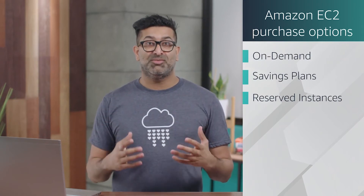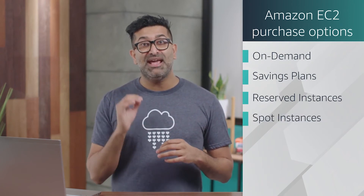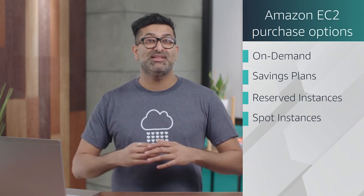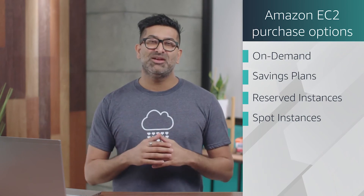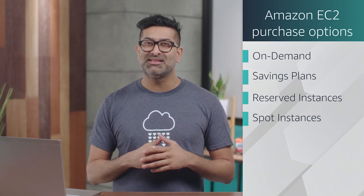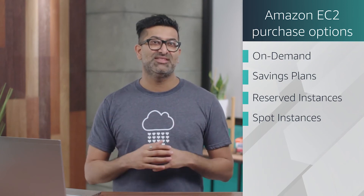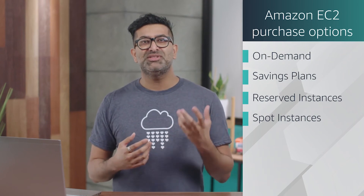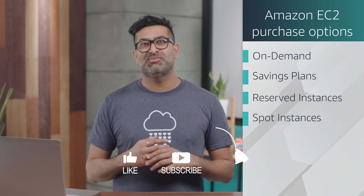The next option is spot instances, which allow you to request spare Amazon EC2 computing capacity for up to 90% off the on-demand price. The catch is that AWS can reclaim the instance at any time they need it, giving you a two-minute warning to finish up work and save state. You can always resume later if needed, so when choosing spot instances, make sure your workloads can tolerate being interrupted.